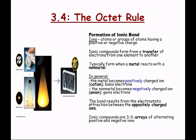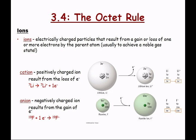Ionic compounds are three-dimensional arrays of alternating positive and negative ions. Ions are electrically charged particles that result from the gain or loss of one or more electrons by the parent atom. Lithium loses its electron and becomes the lithium ion; fluorine gains that electron and becomes the fluoride ion. With anions, you change the end of the name from -ine to -ide. Notice that when lithium loses its electron it gets smaller — it's like throwing out its valence shell. Fluorine, gaining an electron, gets much bigger.